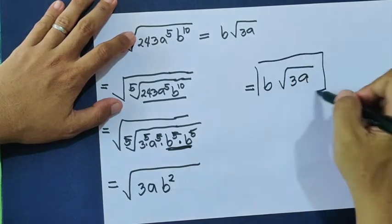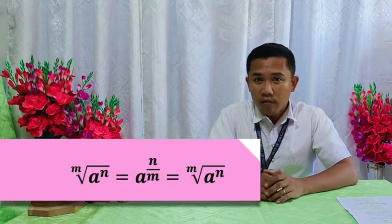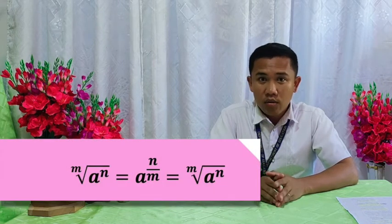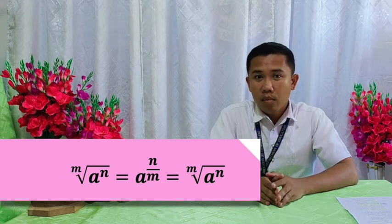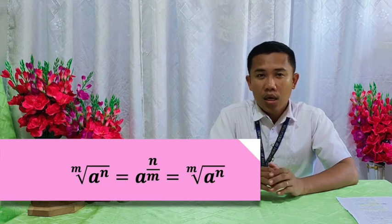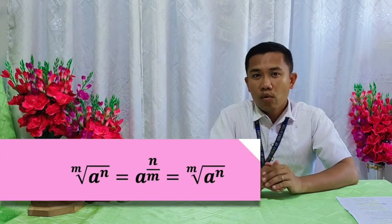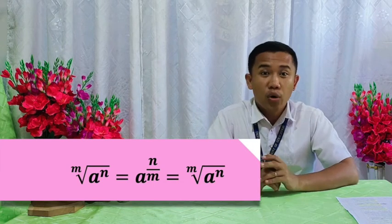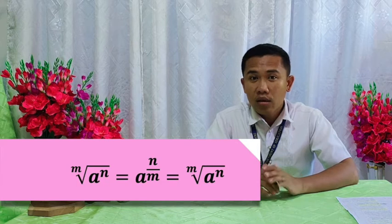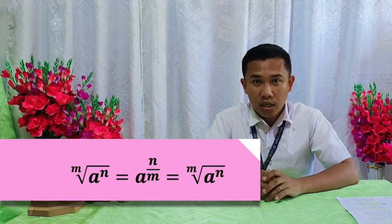As mentioned, there are two ways to simplify this type of radical expression. The other way is using the property: the m-th root of a raised to n equals a raised to n over m, which equals the m-th root of a raised to n. Here, you transform or express the radical into its rational exponential form, and then transform it back into radical expression.